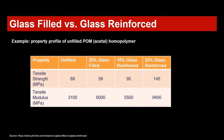Glass filled versus glass reinforced. Here in this table I present an unfilled POM acetal homopolymer, along with the 20% glass filled and the 10% glass fiber reinforced as well as a 25% reinforced grade. With the reinforced grade the fiber is coupled to the polymer matrix, and you can see the consequence of this coupling immediately in the strength of these reinforced grades. We have 95 and 145 MPa compared to the unfilled with 70 and glass filled with 60.